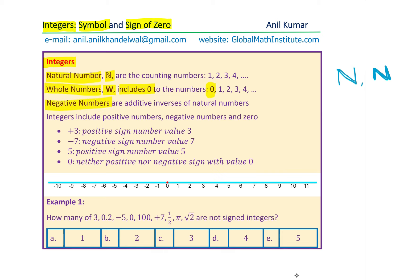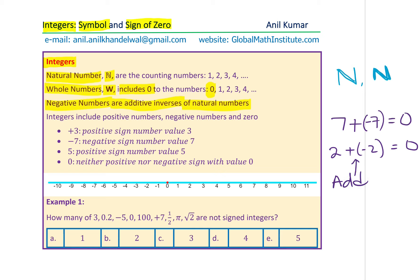Now I would like to define another set of numbers, which I call negative numbers. These negative numbers are the additive inverse of natural numbers. If I have the number 7, the additive inverse means adding minus 7 gives you 0. Similarly, if you have 2 and add minus 2, you get 0. These are the additive inverses.